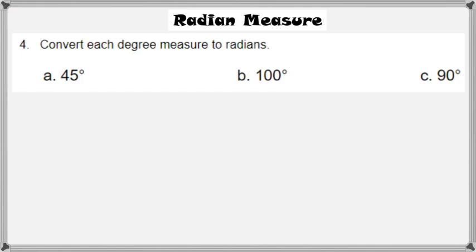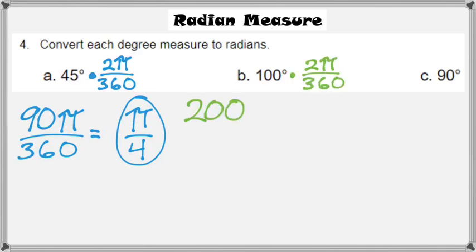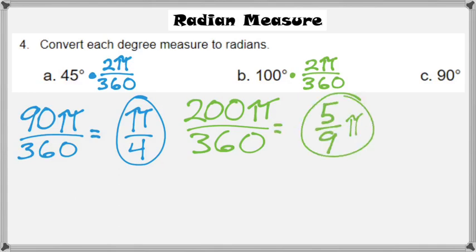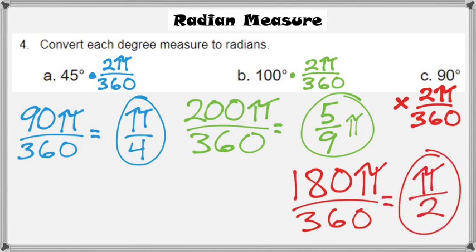Converting each measure into radians: 45 degrees multiplied by 2 pi over 360 gives 90 pi over 360, which reduces to pi over 4. For 100 degrees, 100 times 2 pi over 360 gives 200 pi over 360, which reduces to 5/9 pi. For 90 degrees, 90 times 2 pi over 360 gives 180 pi over 360, which simplifies to pi over 2.